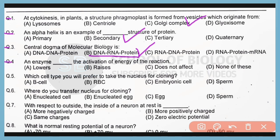Question 4. What is the effect of an enzyme on the activation energy of a reaction? Correct answer is option A. An enzyme lowers the activation energy of the reaction by different ways.